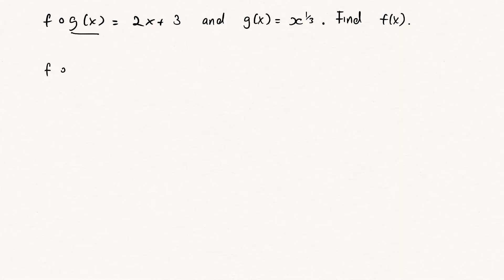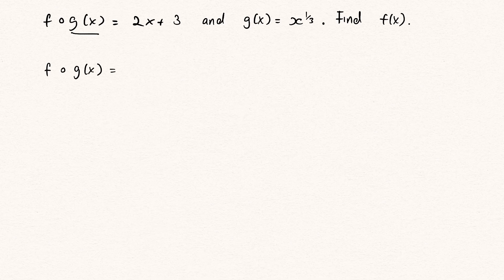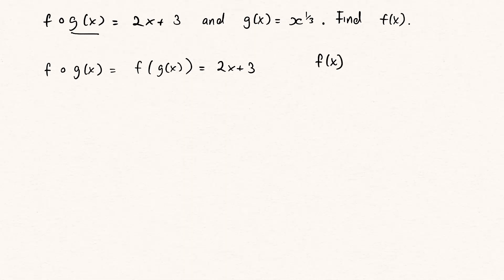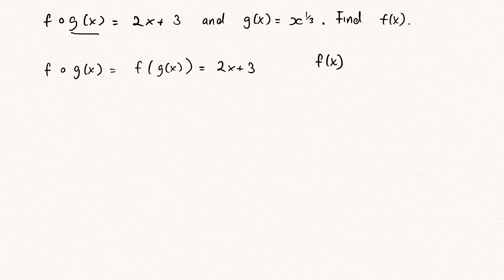We know that f of g of x is the same as saying f of (g of x), and this equals 2x plus 3. This helps me see things better because we have f of g of x and what we want to find is f of x. The only difference here is what's inside the function, which is g of x versus x.